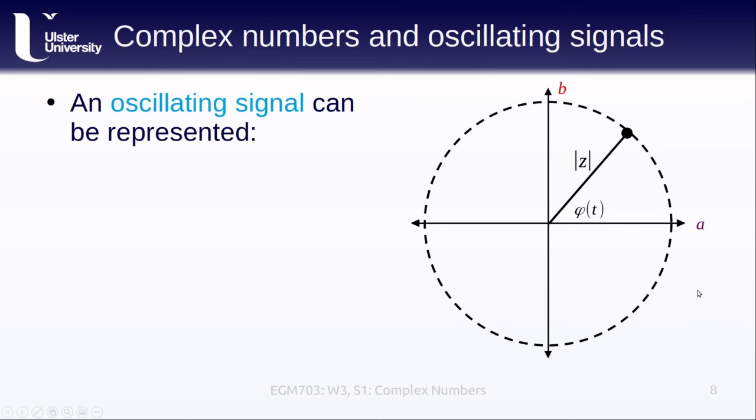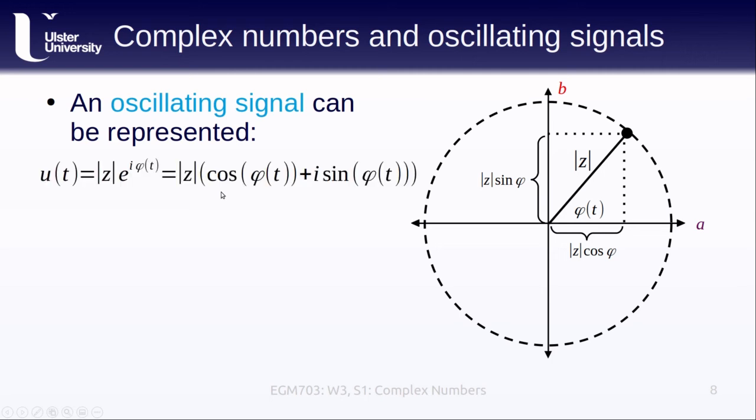So this is just the same as the complex numbers that we've been looking at. The real component of this signal is given by the magnitude of z multiplied by the cosine of the angle, while the imaginary component of this signal is given by the magnitude of z multiplied by the sine of the angle. So we can actually represent this oscillating signal u(t) the same way that we've represented our complex numbers. It turns out we're already pretty familiar with oscillating signals as we've covered in a few different lessons at this point.